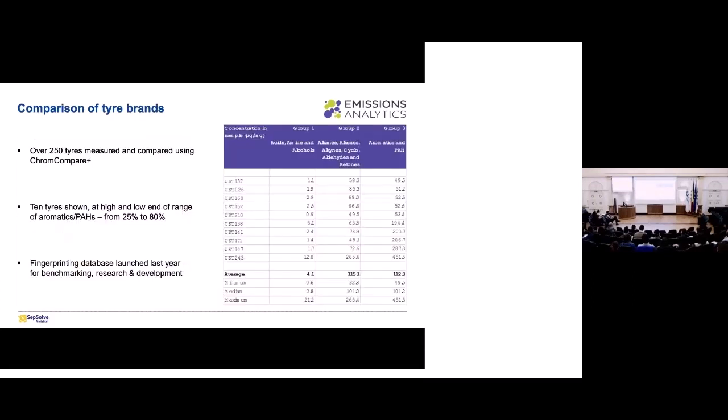And so far, they've measured over 250 different tires and they've been comparing them in the ChromCompare Plus software to try and spot differences that are unique to certain manufacturers. And in the table here, we've got just 10 of the tires shown, the top PAH producers and aromatics producers, and then the lowest emitting for PAHs and aromatics. And you can see from that final column there, that there's a tenfold difference between the lowest emitting and the highest. So it's incredibly variable, the composition of these tires, and that's where the fingerprinting databases really coming into play.